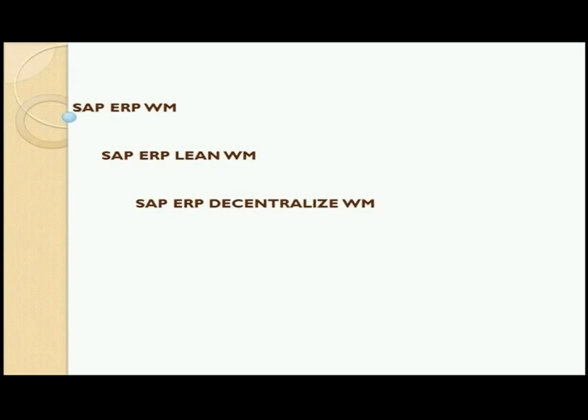Interestingly, in a decentralized WM system, you can still physically deploy WM inside the ECC box on the same machine, but then you have to logically distinguish them. Either you logically distinguish them or you physically and logically distinguish them. Even in a decentralized setup, the two systems still need to communicate, and the communication of transactional data happens using BAPI calls.